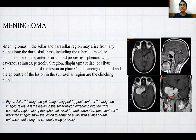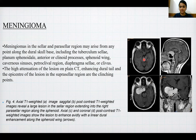Meningioma: meningiomas in the sellar and parasellar region may arise from any point along the dural skull base including the tuberculum sellae, planum sphenoidale, anterior or posterior clinoid processes, sphenoid wing, cavernous sinuses, petroclival region, diaphragma sellae, or the clivus. High attenuation of the lesion on plain CT, enhancing dural tail, and epicenter in the suprasellar region are the clinching points. Post-contrast T1-weighted axial, sagittal, and coronal images reveal a large lesion in the sellar region extending into the right parasellar region along the sphenoid, with avid enhancement and a linear dural enhancement along the sphenoid sinus.